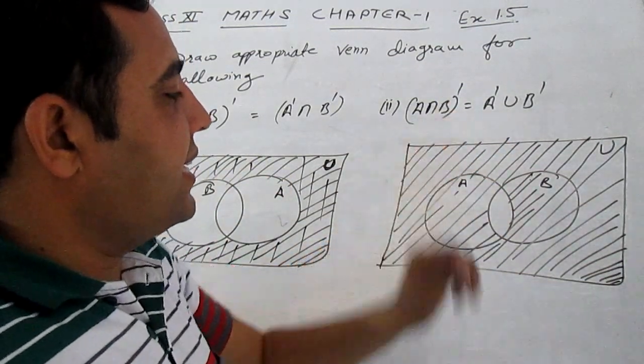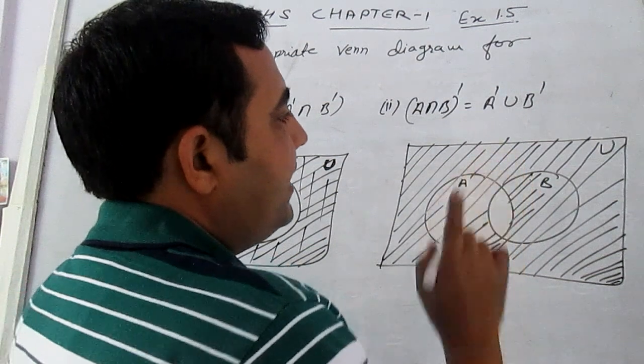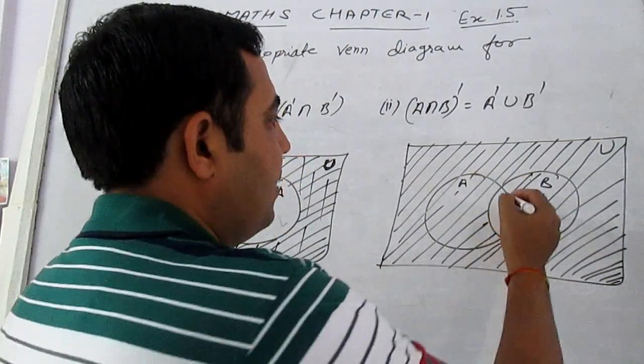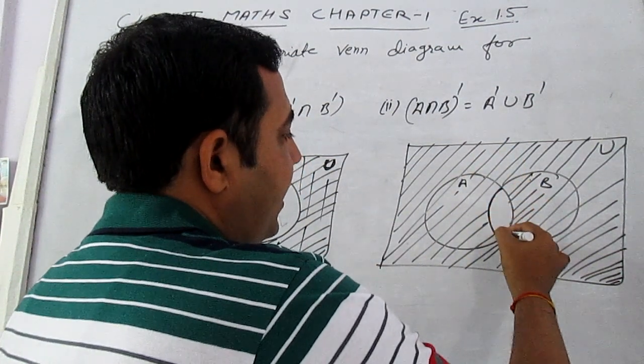Now A intersection B. We know that in A intersection B, common elements always come. The common elements will lie in this portion.